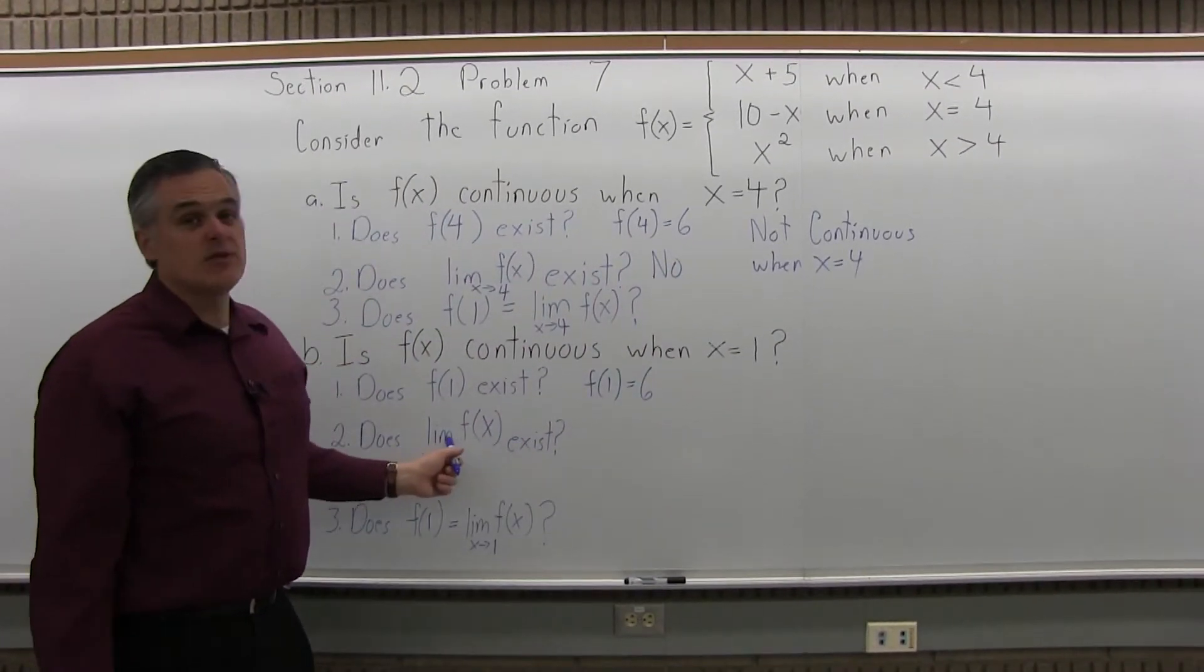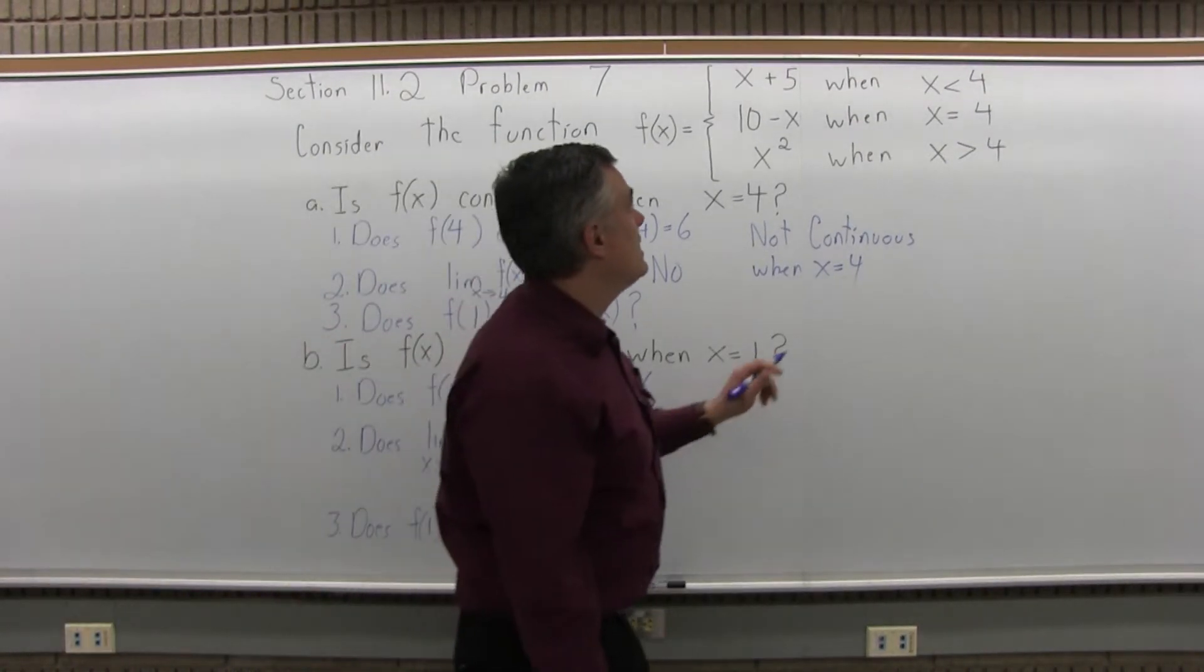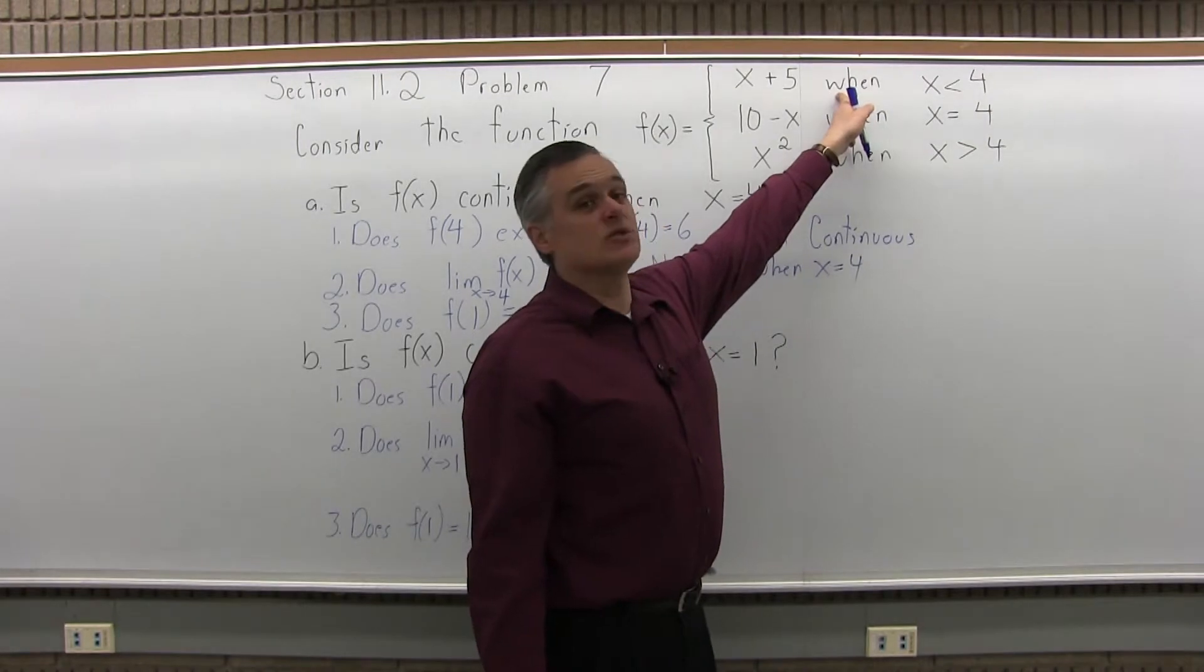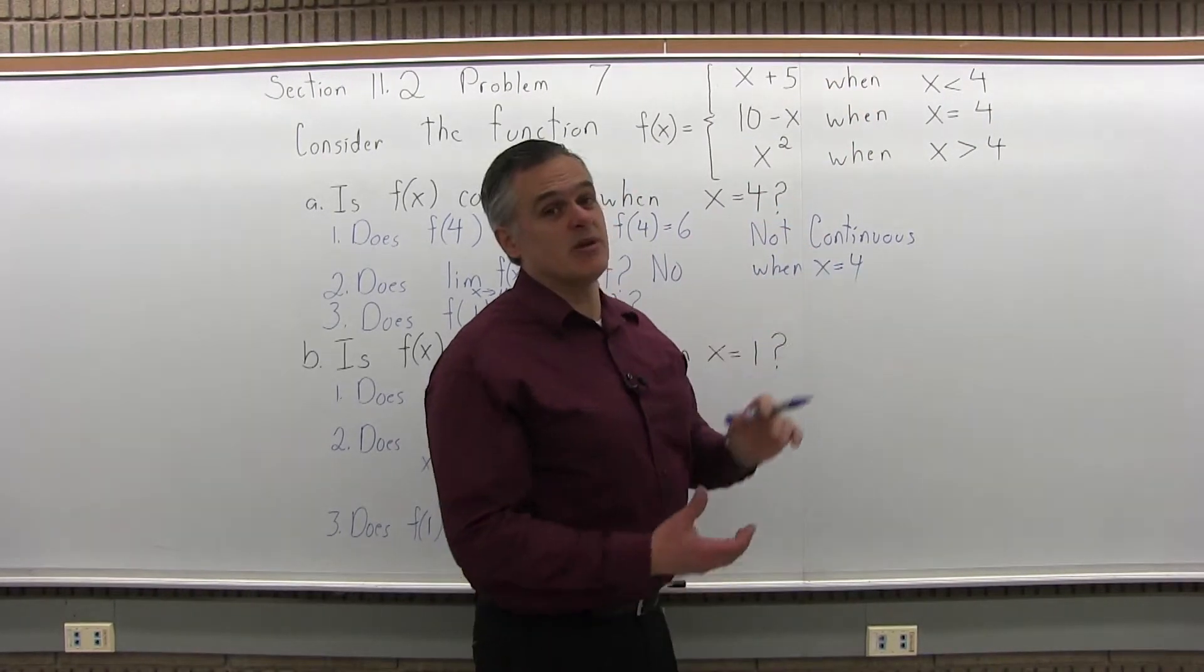Next, does the limit of the function as the input approaches 1 exist? Well, yes. And again, I could find the limit using only the top branch. I don't have to use the middle or the bottom, because now as I approach 1, I want to try values slightly less than 1, like 0.999, and values slightly larger than 1, 1.001.